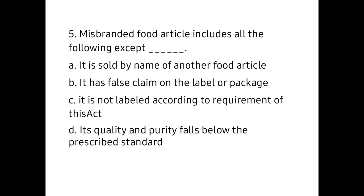Fifth one: Misbranded food article includes all the following except — A) It is sold by the name of another food article, B) It has a false claim on the label or packages, C) It is not labeled according to the requirements of the Act, D) Its quality and purity falls below the prescribed standards. The correct answer is D.